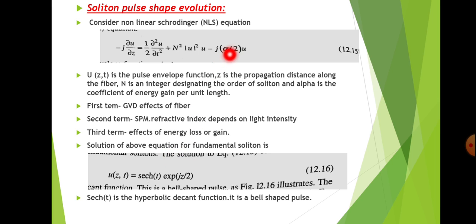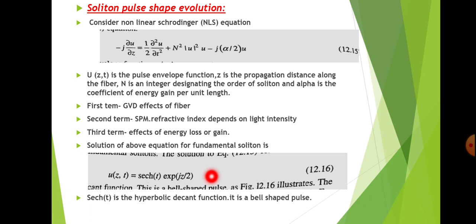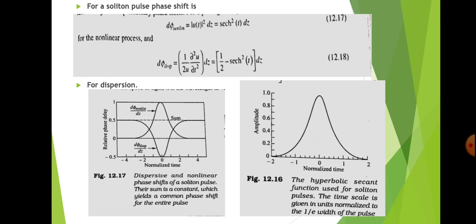The solution of this NLS equation for the fundamental soliton is: u(z,t) = sech(t) · exp(jz/2), where sech(t) is the hyperbolic secant function. The hyperbolic secant function has a bell-shaped form, and this represents the soliton waveform.